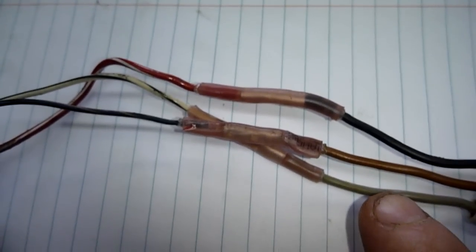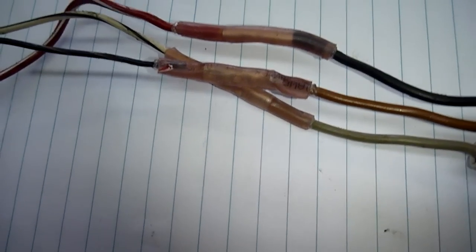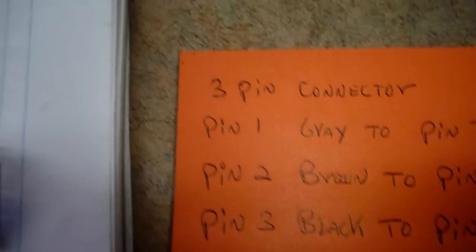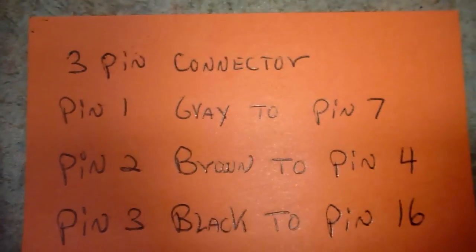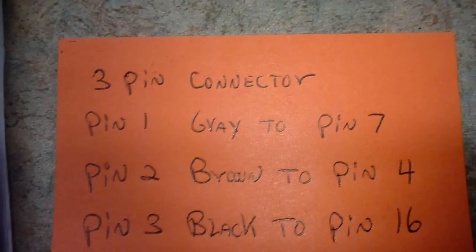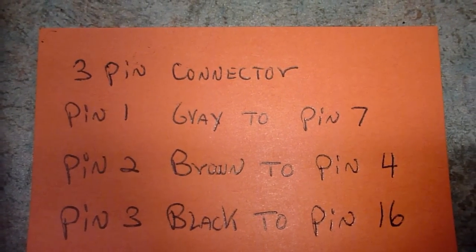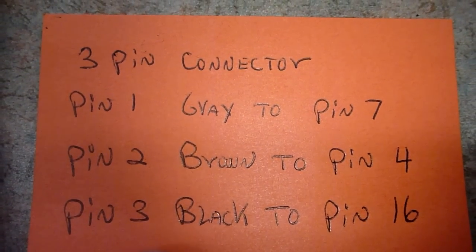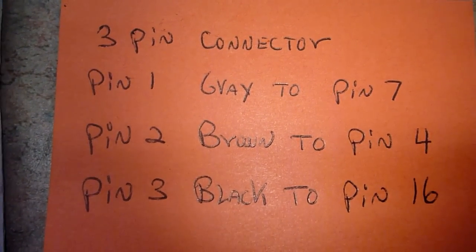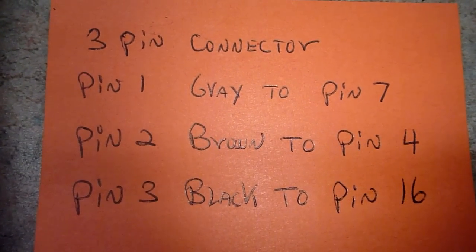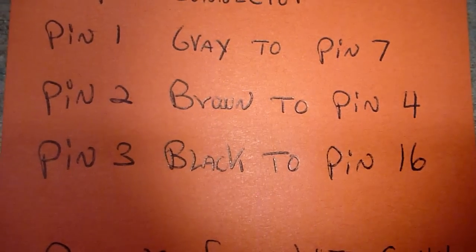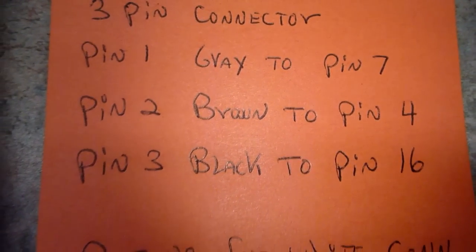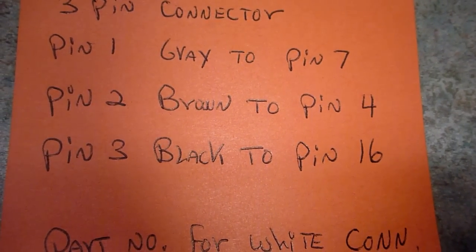So the way you want to connect it is you connect pin number one on that white connector to the pin seven on the OBD2 connector, and then pin number two to the brown to the pin number four of the OBD2 connector, and then pin number three on the flat white connector to the pin 16 of the OBD2 connector.